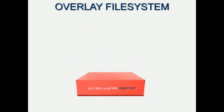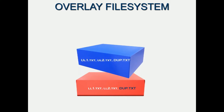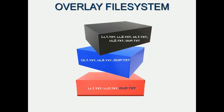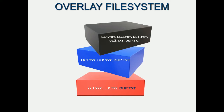The next question is: what happens if there is a duplicate file in both the lower layer and the upper layer? The answer is that what you will see in the top layer, also called the overlay layer, is the duplicate file from the upper layer.